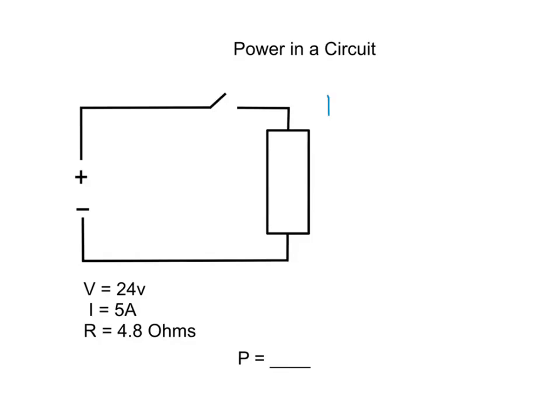We'll start with P equals V times I. If we look at the values that we have for this circuit, that means we have 24 times 5, which will equal 120 watts. Again, like anything we do, it's always very important we show all of our working and we always show the units in which we're working with.